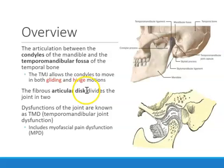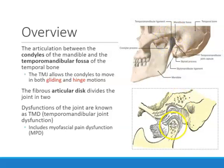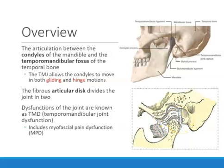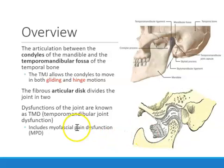Between the temporal bone and the mandibular bone there is a disc called the articular disc. This disc is fibrous and divides the joint into two. Above it we have the upper synovial cavity, and right below it we have the lower synovial cavity. The TMJ is a very common area where pain can be involved — for example, if you're grinding or clenching a lot, your TMJ could be acting up.